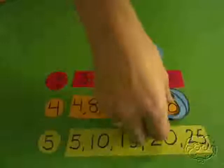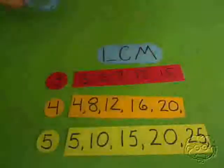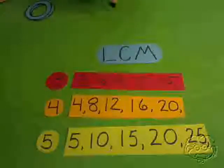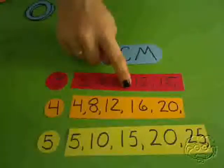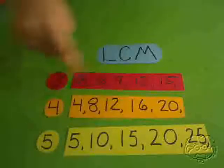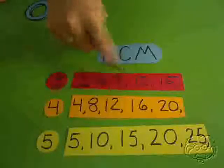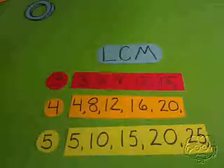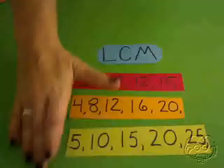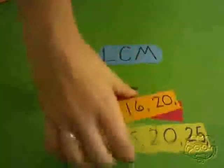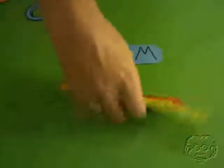You'll notice that 20 is also the product of 4 and 5, just like 12 — the least common multiple for 3 and 4 — was the product of 3 and 4. So the least common multiple in some cases might be the product of the two numbers, and in some cases it might not be the product of the two numbers.